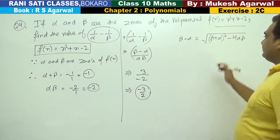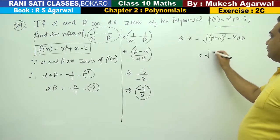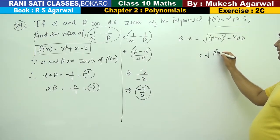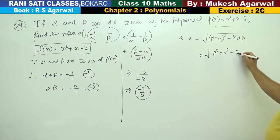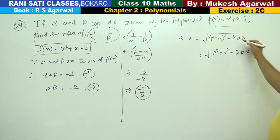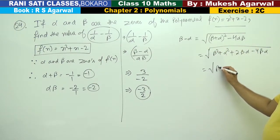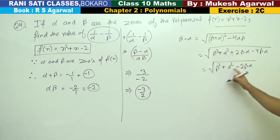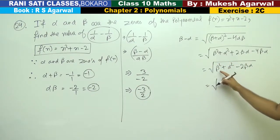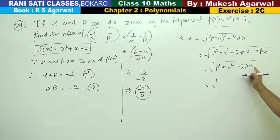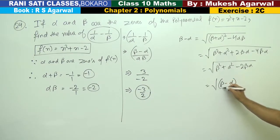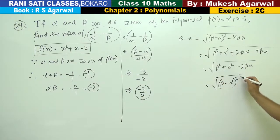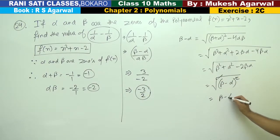Now to explain this formula: on the RHS, expanding beta plus alpha whole squared gives beta squared plus alpha squared plus 2 beta alpha. Then subtracting 4 beta alpha gives beta squared plus alpha squared minus 2 beta alpha, which equals beta minus alpha whole squared. Taking the square root cancels the square, leaving beta minus alpha.